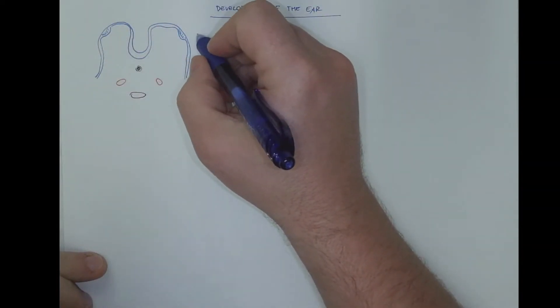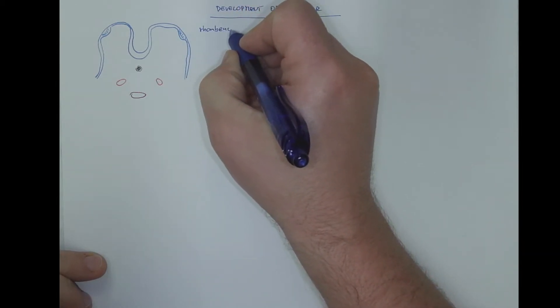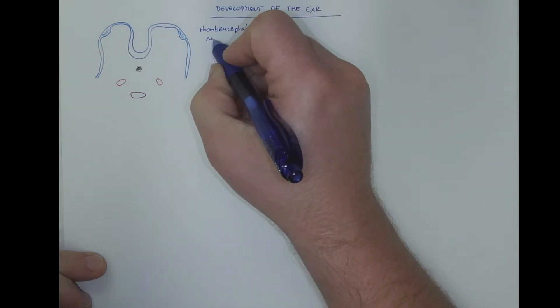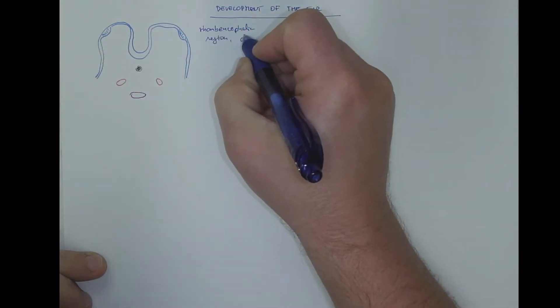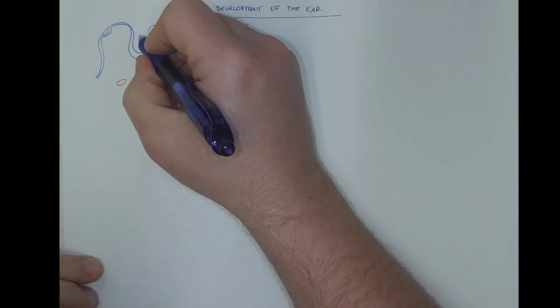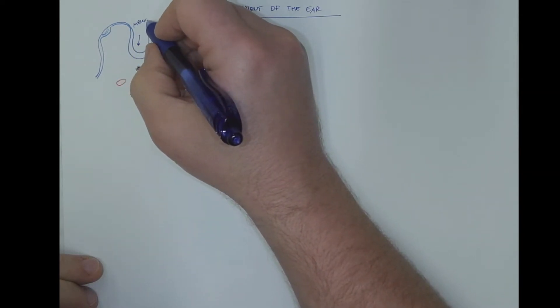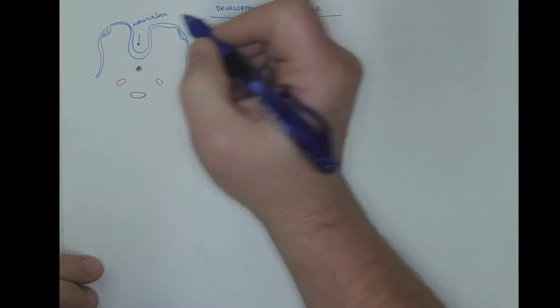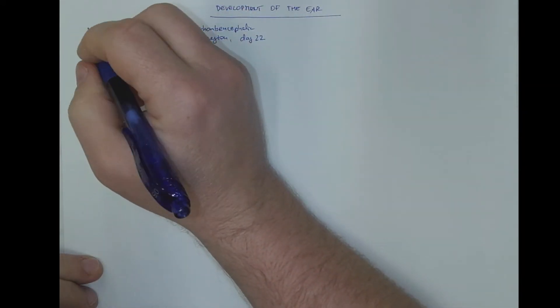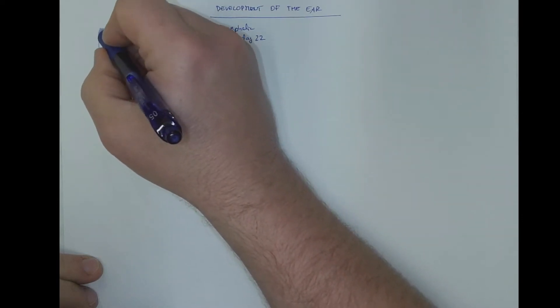So this is the rhombencephalic region, let us say day 22. Here is the neurulation in progress. And this thickening of the surface head ectoderm is called the otic placode.